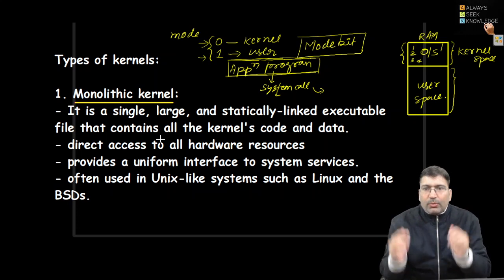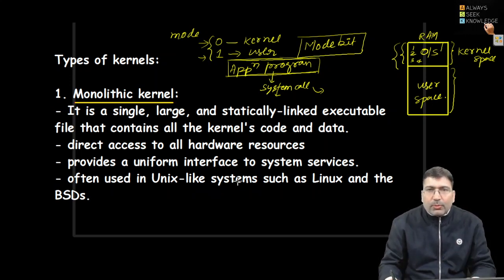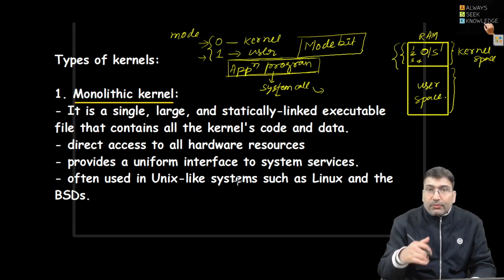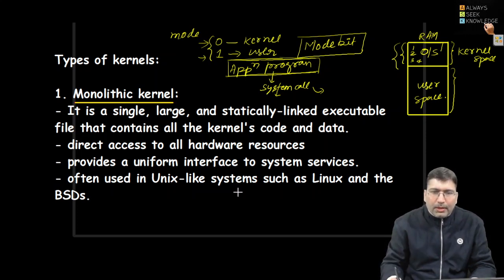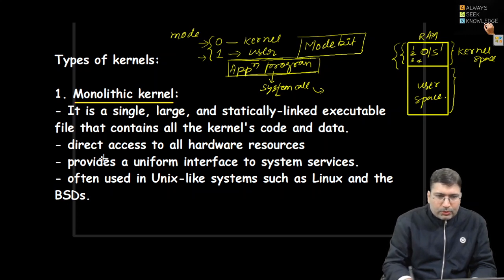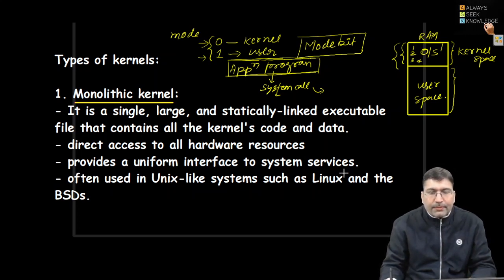In a monolithic kernel, all the kernel modules are loaded in kernel space, so the size of the kernel is large and it consumes quite enough space in memory. This kernel functions very fast because all modules are loaded and statically connected, although management is tricky — if any module creates a problem, the overall kernel can be corrupted. Direct access to all hardware resources is available, and it provides a uniform interface to system services, often used in Unix-like systems.